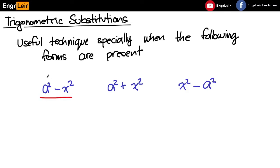a squared minus x squared, where a is any constant, a squared plus x squared, at saka x squared minus a squared. When these three forms or one of these forms is present, the trigonometric substitution can possibly make our lives easier.